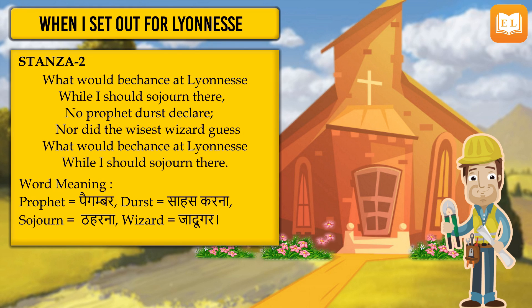'What would bechance at Lyonnesse while I should sojourn there? No prophet durst declare, nor did the wisest wizard guess. What would bechance at Lyonnesse while I should sojourn there?' Now, the poet is on his way to Lyonnesse, and he thinks: what would happen to me? Mera kya hoga? Even no fortune teller or magician could have foretold what would happen. Yahaan tak ki jo log future batate hain, woh bhi nahi bata sakte ki mera saath kya hoga ab, aur kya main experience kar raha houn ab. What would happen of me? Well, I am staying here — nobody knows, even I myself don't know, said the poet at the end.